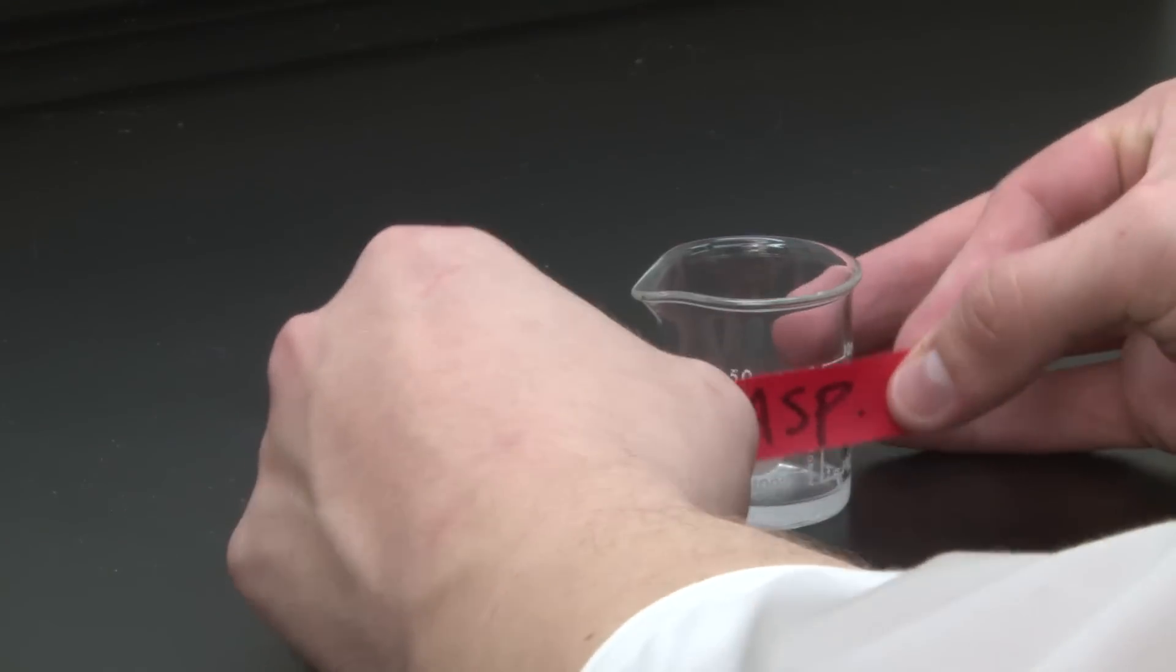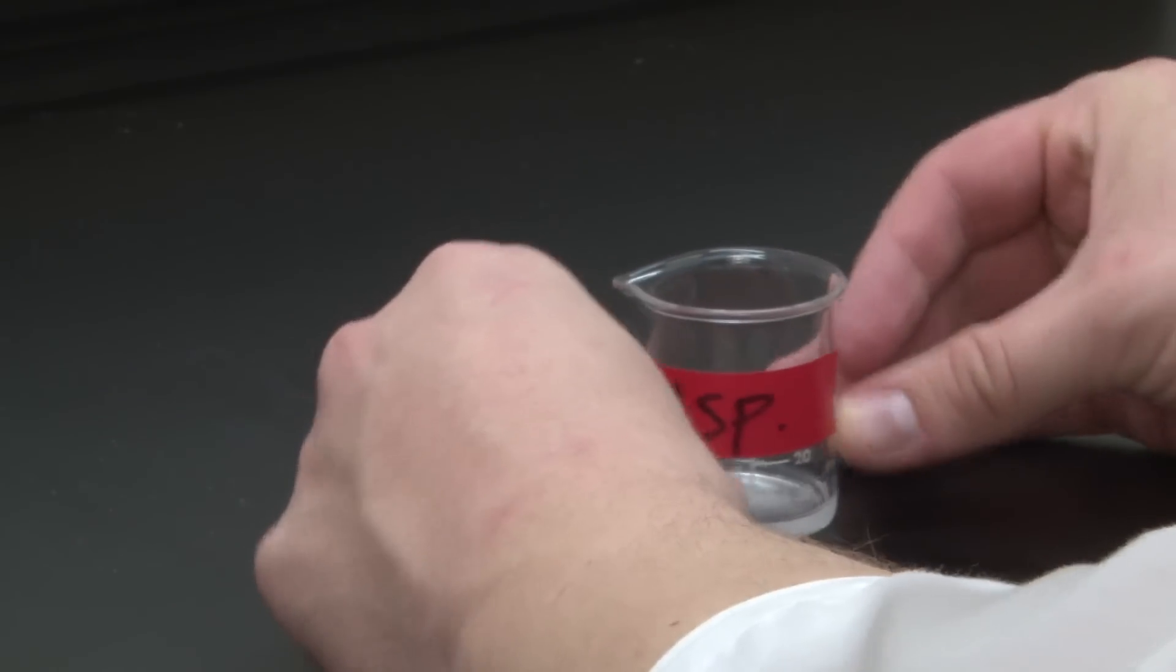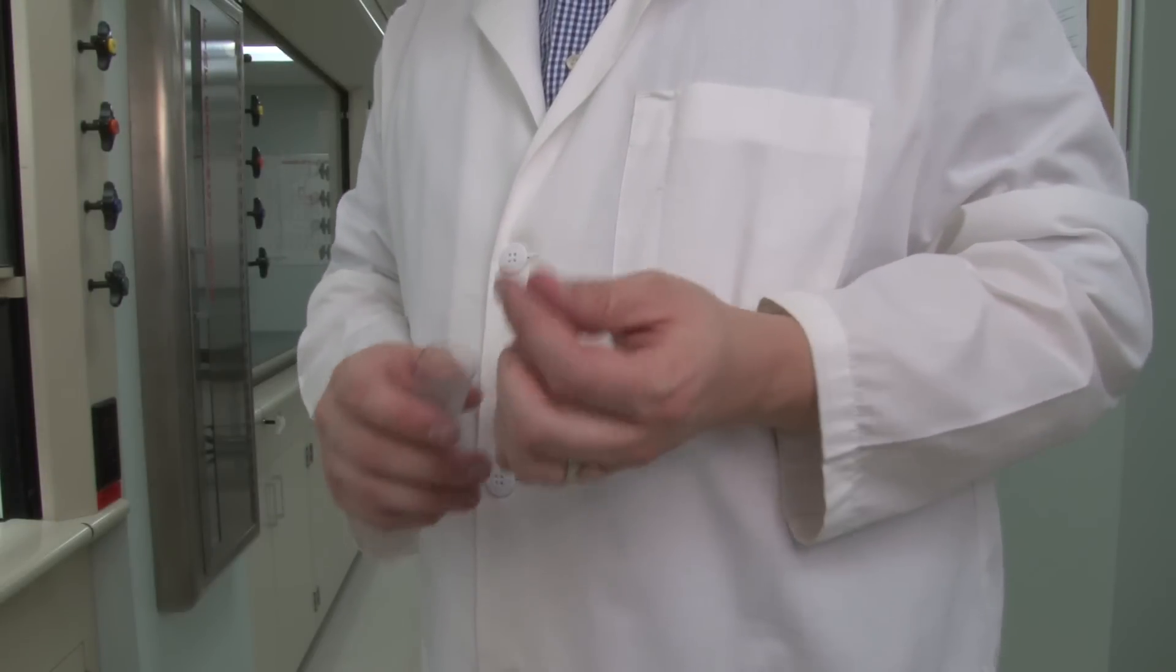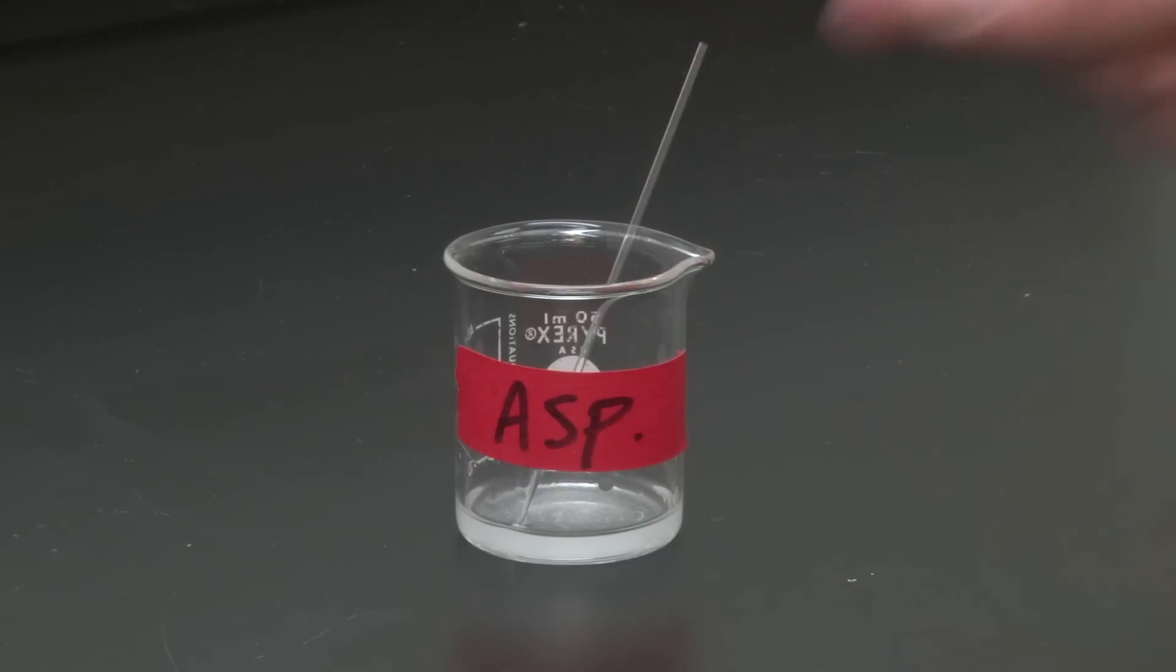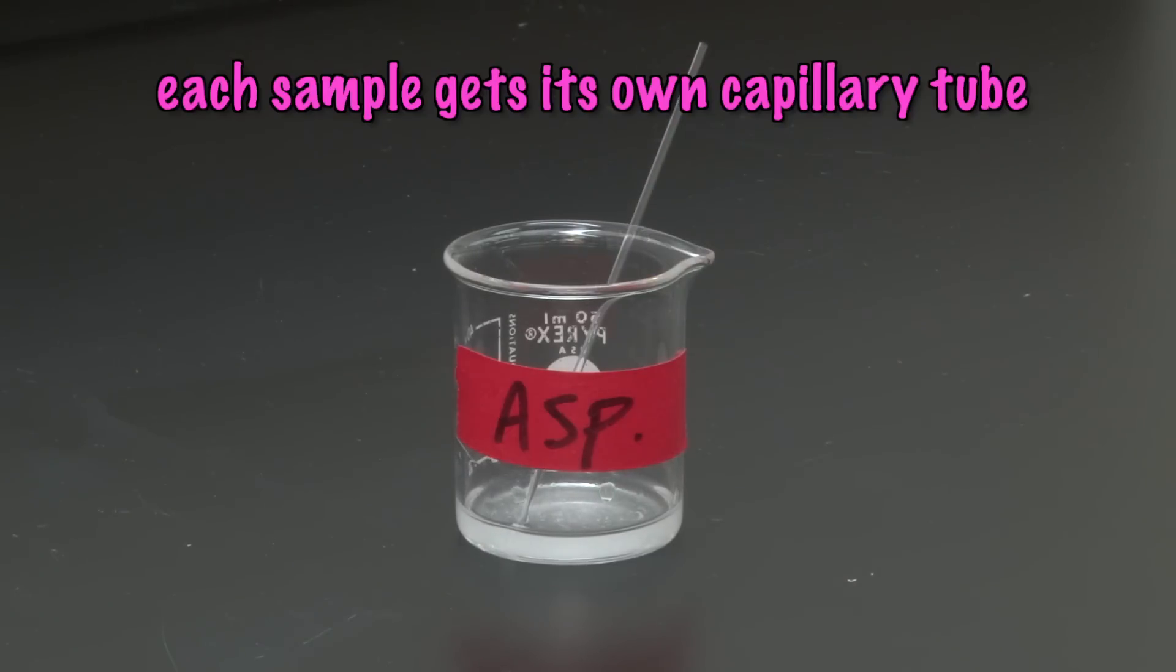Label the beaker with the name of the known substance and place one capillary tube in the beaker. It's important that this capillary tube only be used for this sample. Capillary tubes never come clean, so if we used this tube for other samples, the tube would still be contaminated with previous samples and they would show up in our TLC analysis. Leave the labeled beaker with the capillary tube under the hood.